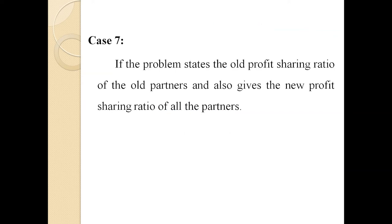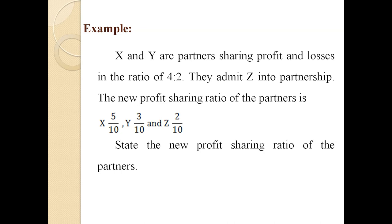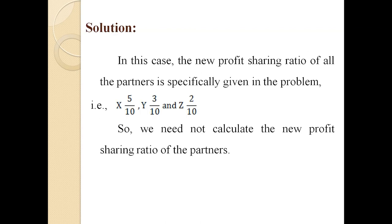Case number 7, the last case: if the problem states the old profit sharing ratio of the old partners and also gives the new profit sharing ratio of all the partners. In this case, the new profit sharing ratio is specifically given, so we need not calculate it. For example: X and Y are partners sharing profits and losses in the ratio of 4 : 2. They admit Z into partnership. The new profit sharing ratio is X = 5/10, Y = 3/10, and Z = 2/10. So we need not calculate the new profit sharing ratio; it is directly given.